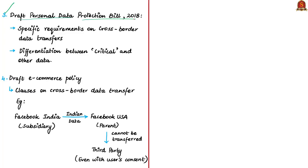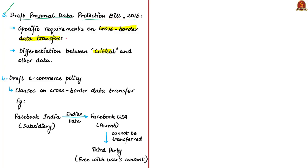The draft personal data protection bill of 2018 contains specific requirements on cross-border data transfers, meaning transferring and storage of data outside India. This rule is seen as stricter than the recommendations of the Shri Krishna Committee, which recommended data localization based on classifying data as critical and non-critical. But the draft bill prefers storing the entire data inside India only. The final material available in the public domain is the draft e-commerce policy, which also has clauses on cross-border data transfer.